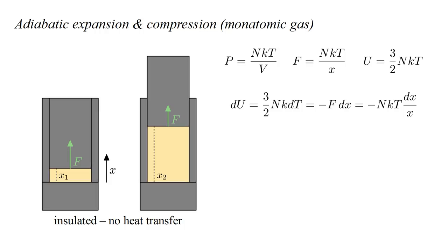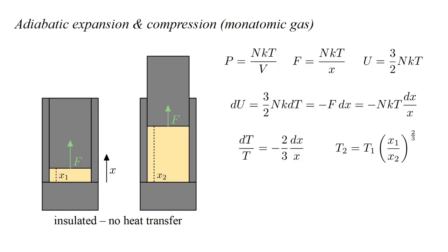By the first law, dU equals the negative of the work done by the gas, minus F·dX. Substituting for F, this becomes minus NKT times dX over X. Considering the second and fourth expressions, cancelling the common N and K factors, dividing by T, and multiplying by two-thirds, we get dT over T equals minus two-thirds dX over X. The corresponding relation between temperature and piston position is T-2 equals T-1 times (X-1 over X-2) to the two-thirds power.